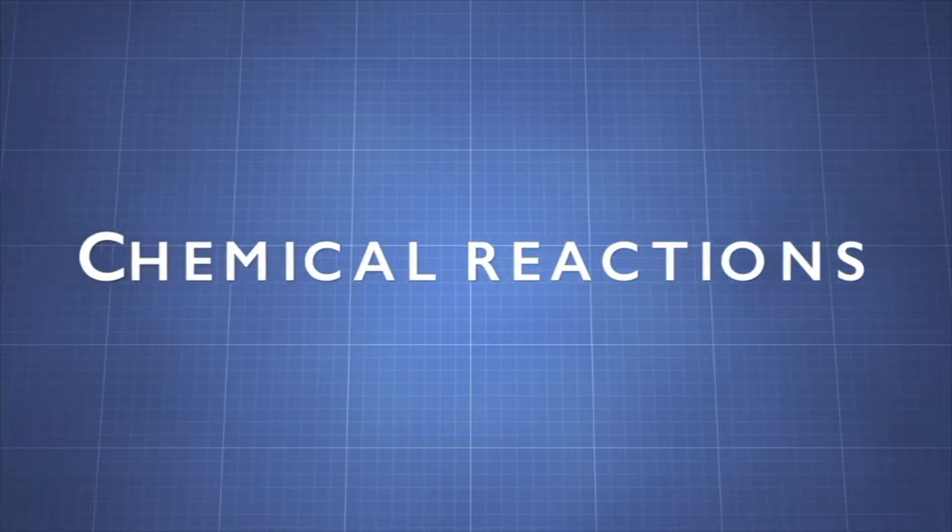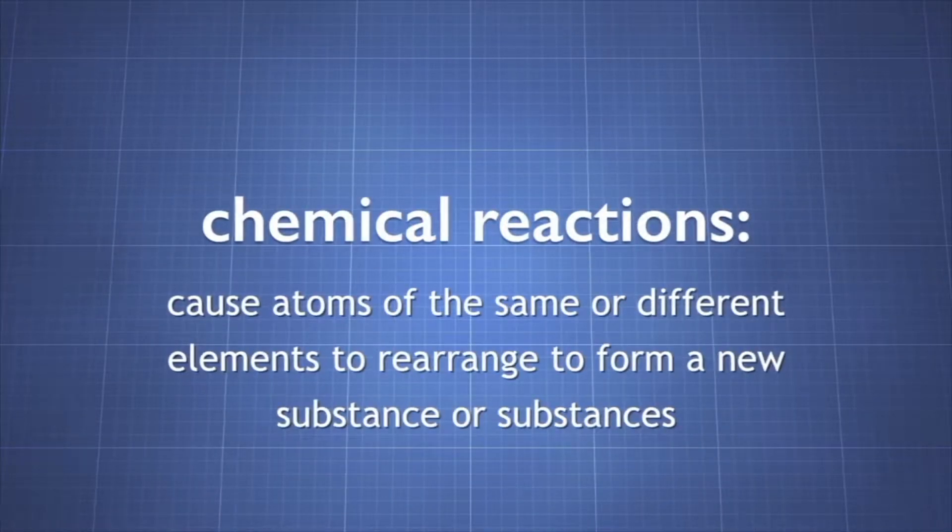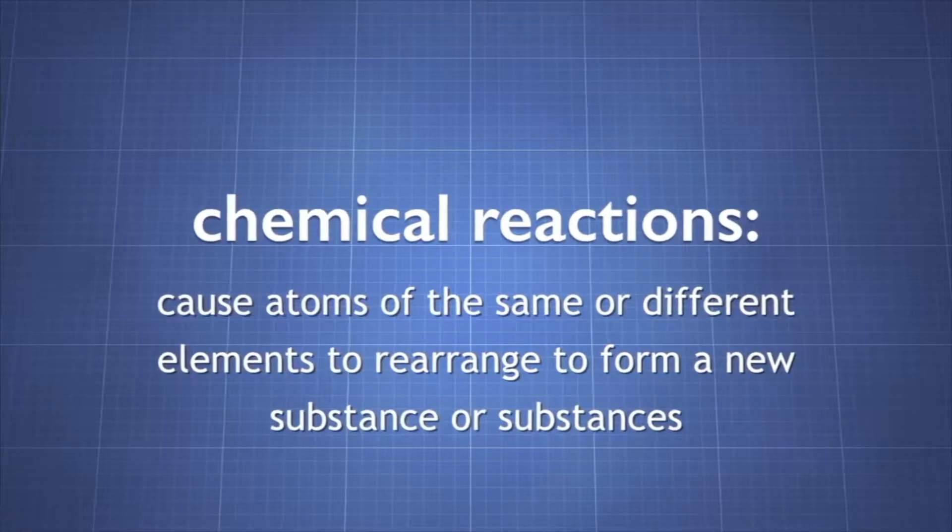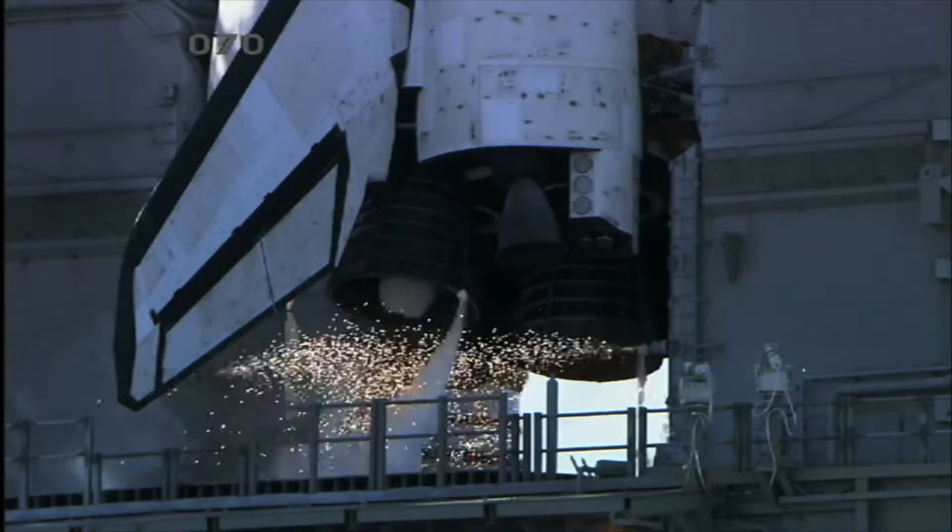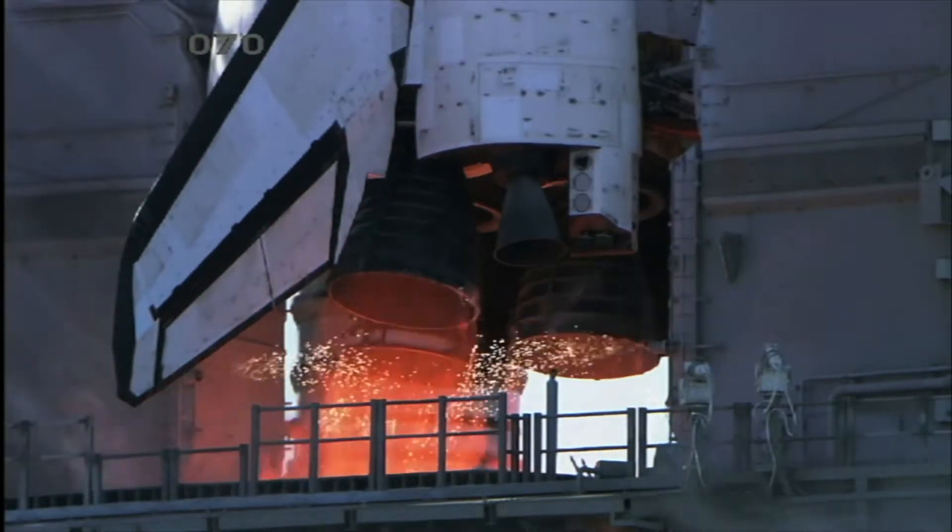Chemical reactions cause atoms of the same or different elements to rearrange to form a new substance or substances. The differences between reactants and products indicate that a chemical reaction has taken place.